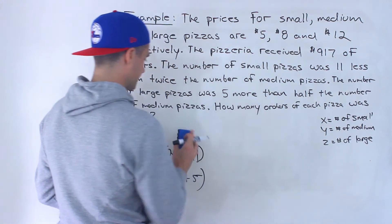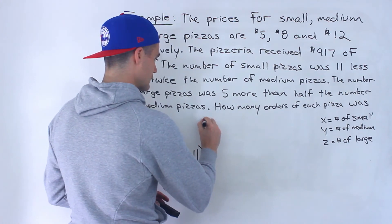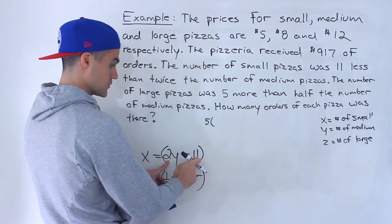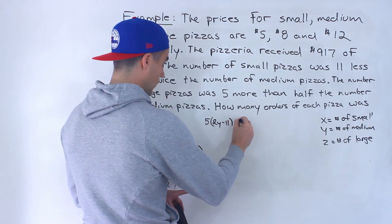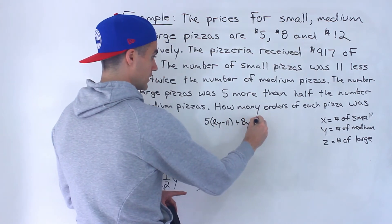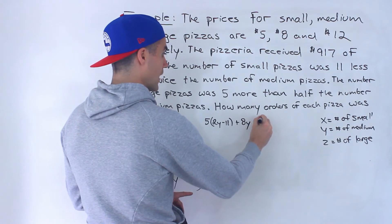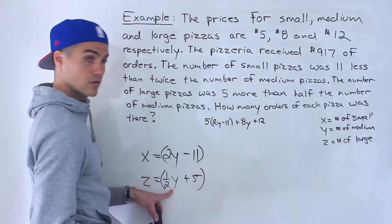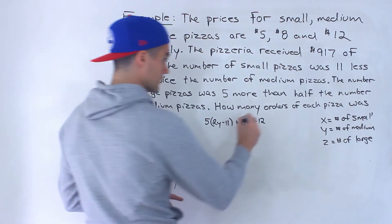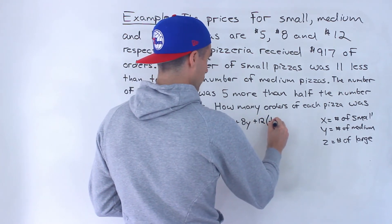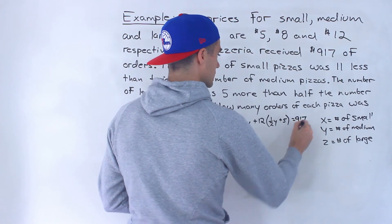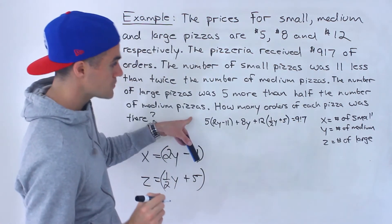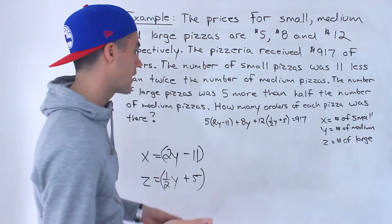So we would have 5 times x, which is 2y minus 11, plus 8y that we're not touching, plus 12, and then we would plug in that for z. So instead, one half y plus 5 equals 917, like that. And now notice we have an equation all in terms of y that we could solve.